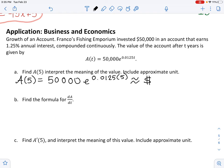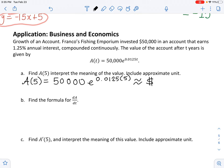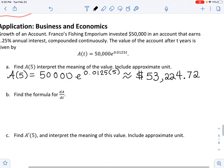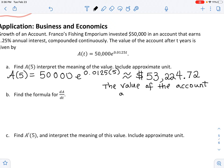So if I go ahead and type this in. Give me one second. I'm typing this in. 0.0125 times 5. It comes out to be $53,224.72. And this is the amount. Can I go ahead and write that down? Because they wanted us to interpret it. This is the value of the account after 5 years.